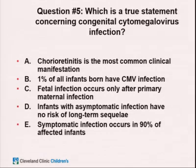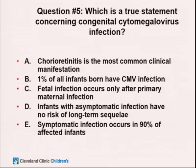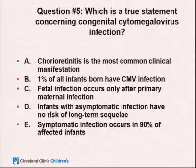Question about congenital CMV: which is a true statement? Chorioretinitis is the most common manifestation; 1% of all babies born have CMV; fetal infection occurs only after primary maternal infection; asymptomatic infants have no risk of long-term sequelae; or symptomatic infection occurs in 90% of affected infants. The right answer is B — 1% of all babies born have congenital CMV.